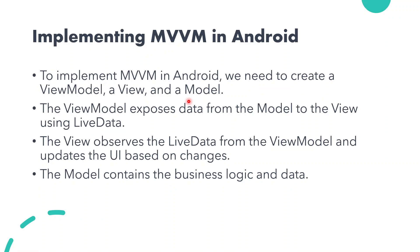The ViewModel exposes data from the Model class and renders it to the View using LiveData. If there are changes in the database, they will automatically be redirected to the View through LiveData. LiveData means changes can be continuously monitored by the ViewModel. The View observes the LiveData from the ViewModel and updates the UI based on changes. The Model contains both the business logic and the data.